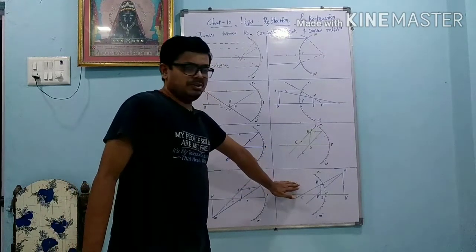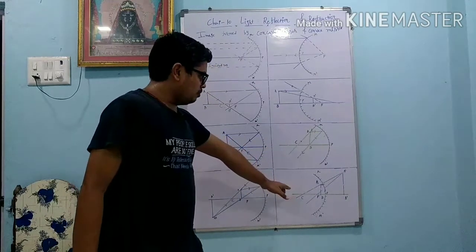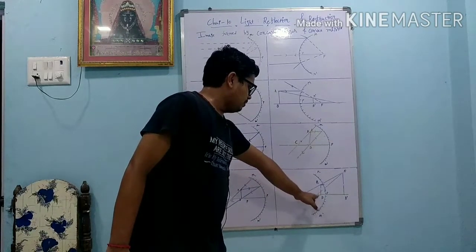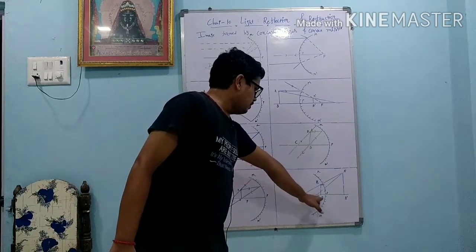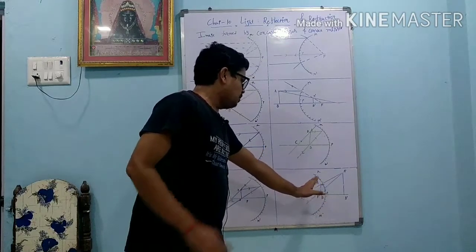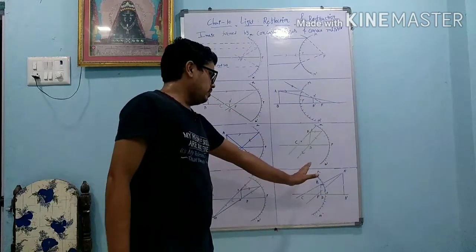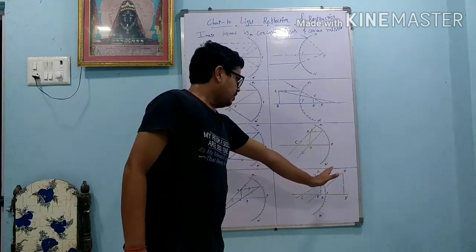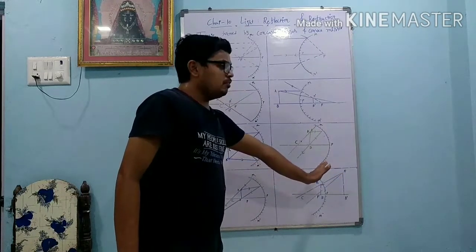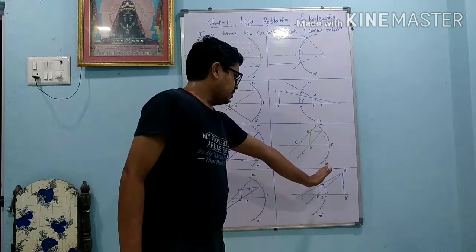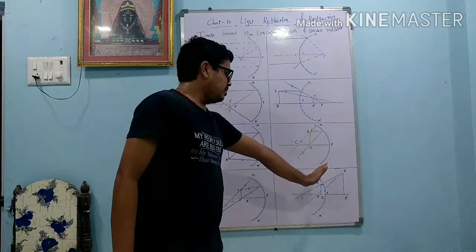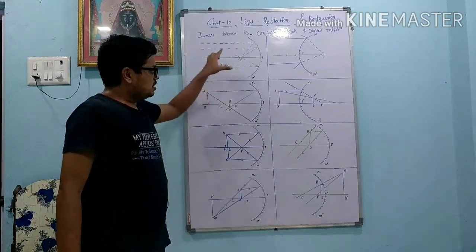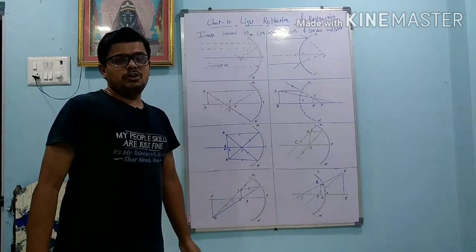Most importantly, the last point: if we keep the object between the principal focus and pole, then the image is obtained on the other side. It is a virtual and erect image, and it is a magnified image. So whatever we discussed - that is about the concave mirror.